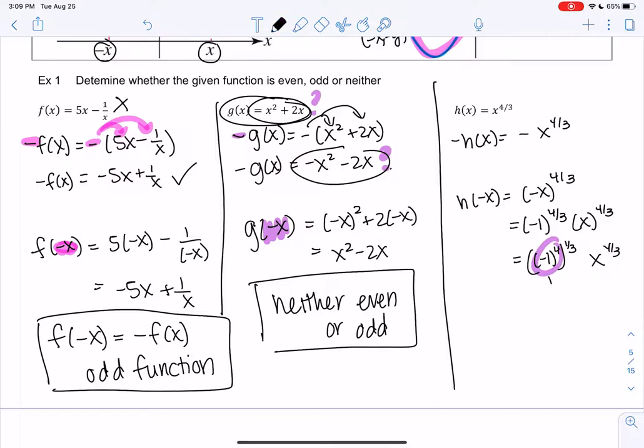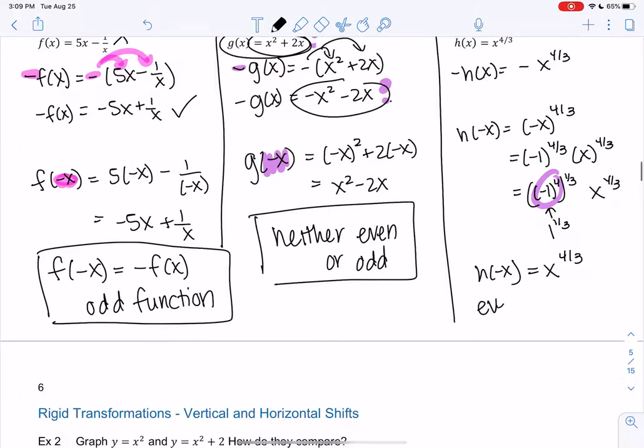I think that becomes positive 1, just like negative 1 squared is positive 1. Same with the 1/4. We bring that to a 1/3 power, and that's just 1. So we get the original function. So in this case, this one would be even. Because h(-x) equals h(x).